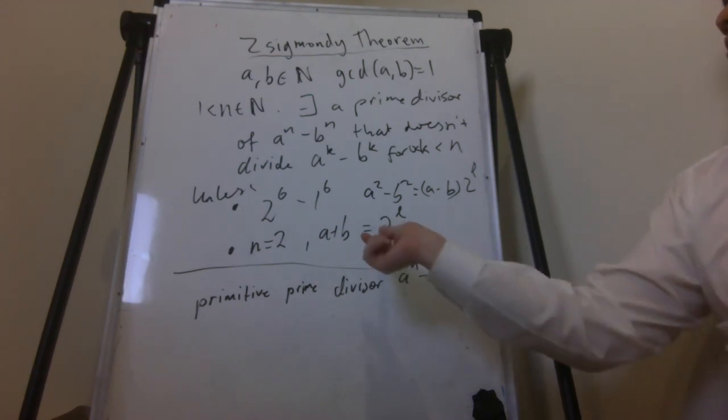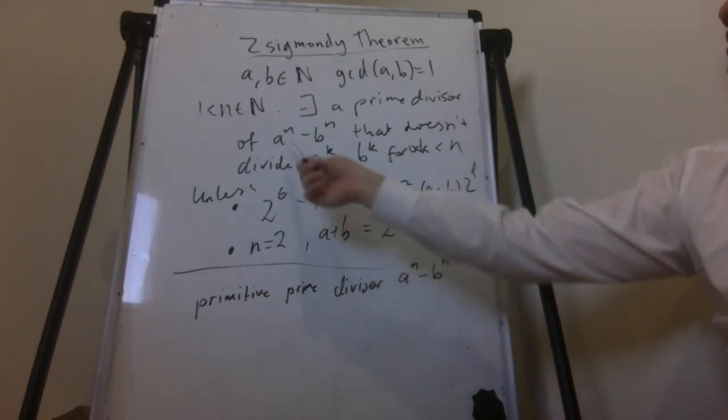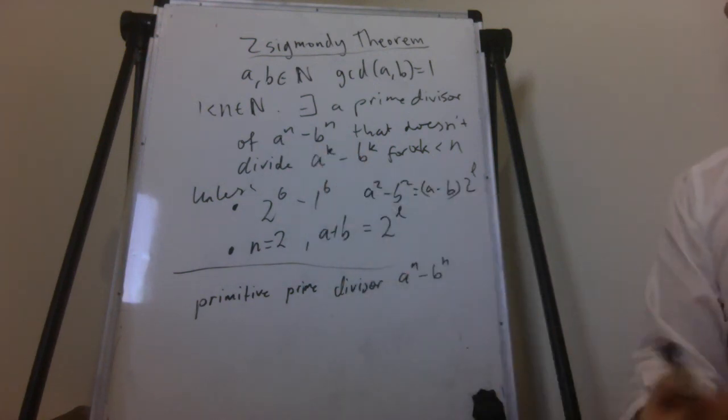So these are obviously exceptions once you've checked them. And the question is why this theorem holds. Just the way it's been defined in this situation, something that divides this and not divides this is very similar to the definition that we gave for cyclotomic polynomials. So that's why we're going to start with cyclotomic polynomials and then we're going to work our way to a proof of this theorem.